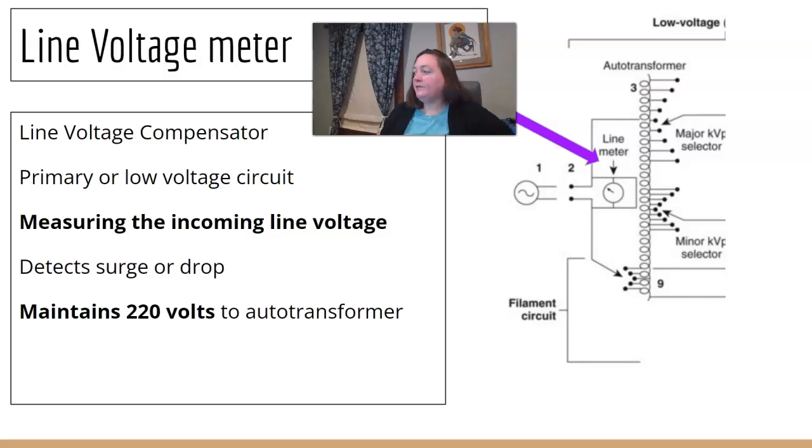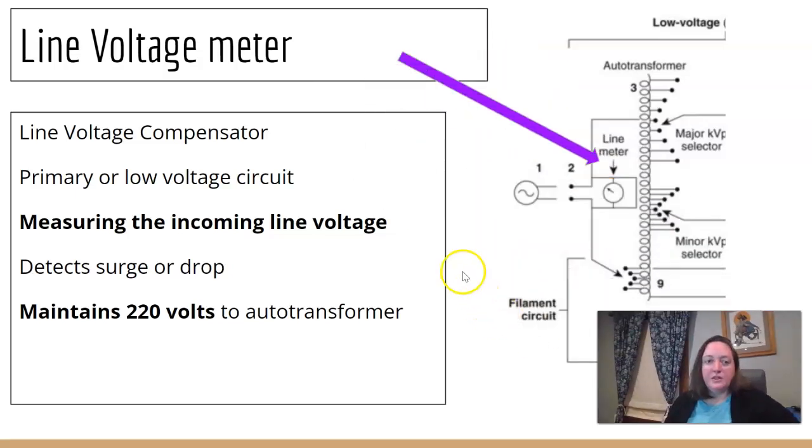There is a line voltage meter, which is sometimes called line voltage compensator. And it does what's in the name. It compensates. It's going to measure the incoming line voltage. And if it detects a surge or a drop, it's going to maintain those 220 volts for the auto transformer. And that's the first transformer that we hit in the circuit.